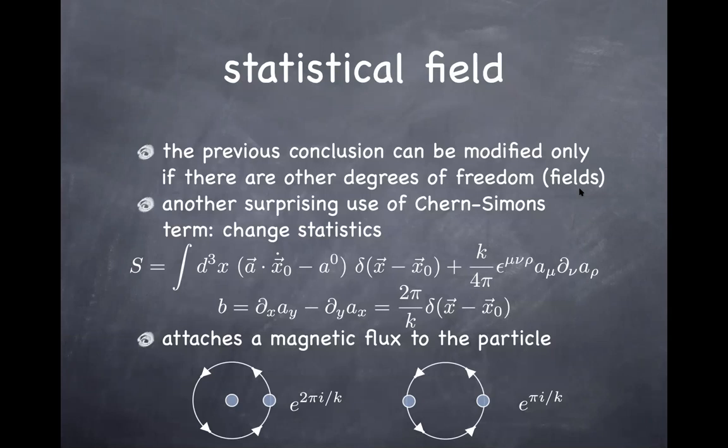It turns out there is one extra degree of freedom one can consider — again in the context of a 2+1 dimensional system — called the statistical gauge field. This little a is similar to a gauge theory, but it's meant to be an auxiliary field without dynamics, just like what we introduced for the gauge-fixing procedure. But what this field is especially about is that it can change the statistics of other particles.